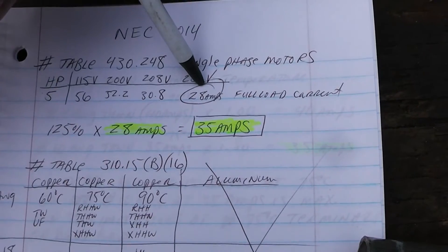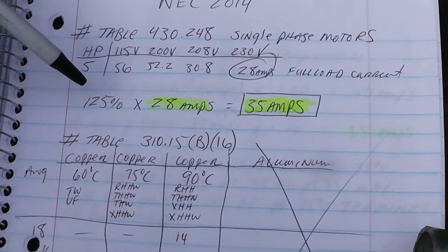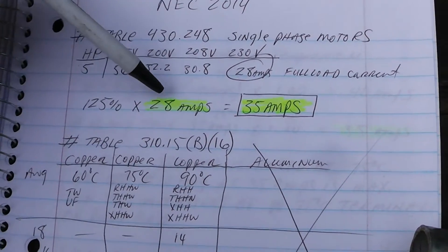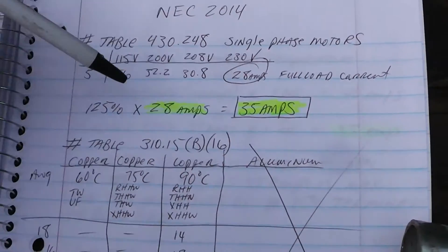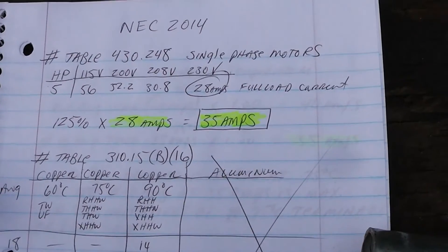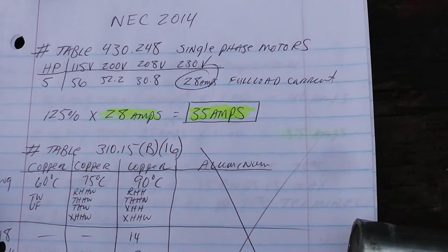That's what you have to size the conductor or the wire to - that's the full load current. To find the size of the conductor, we multiply the full load current, which is 28, by 125 percent, and that gives us exactly 35 amps.